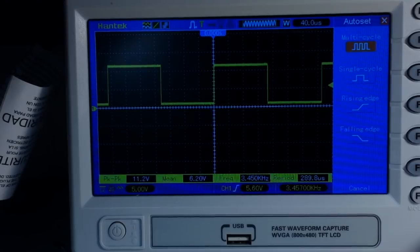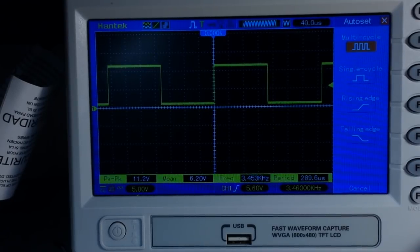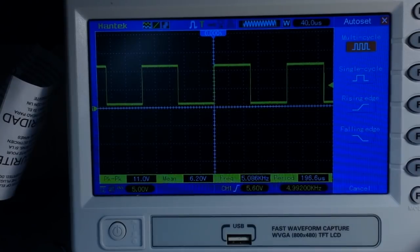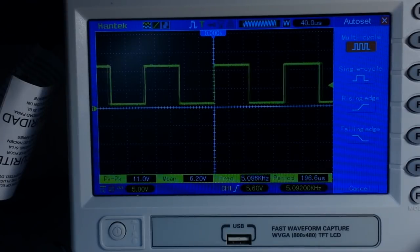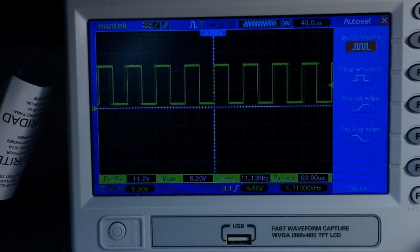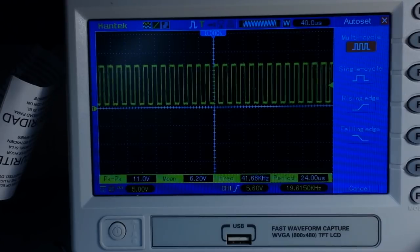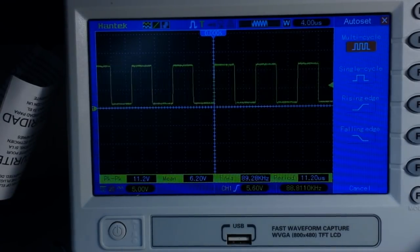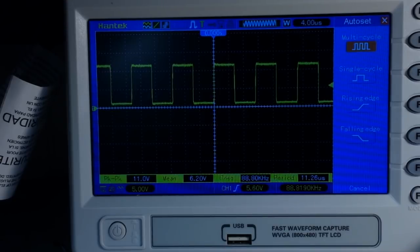Let's turn up the fine knob, and that takes us up to 5.091 kilohertz. Then we'll turn the coarse knob all the way up. We're still getting very good square waves at 88.818 kilohertz.